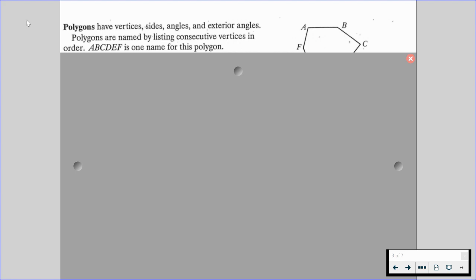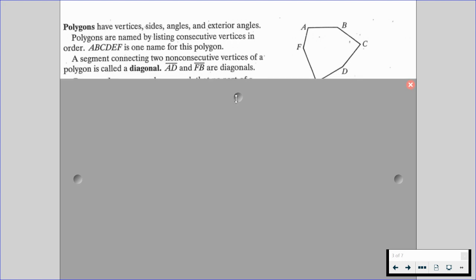So polygons have vertices, sides, angles, and exterior angles. Polygons are named by listing consecutive vertices in order. So A, B, C, D, E, F is one name for the polygon on the right-hand side.